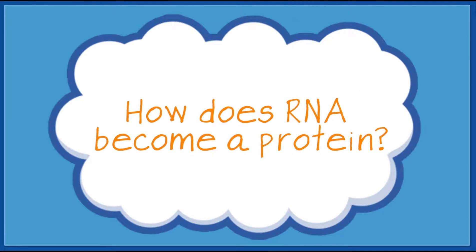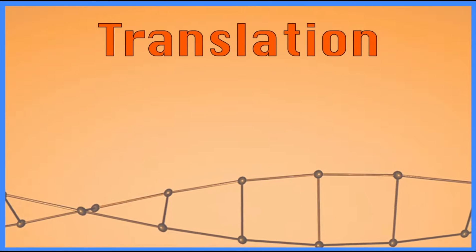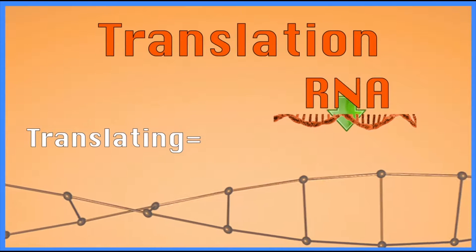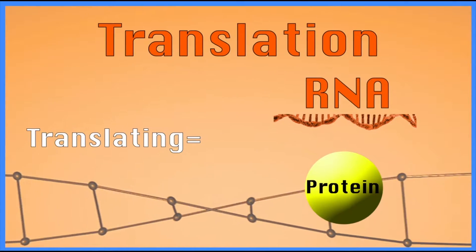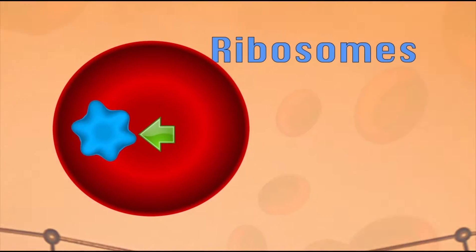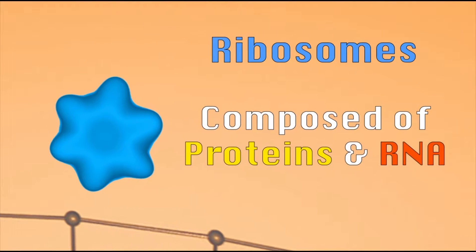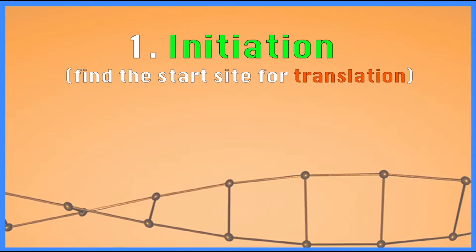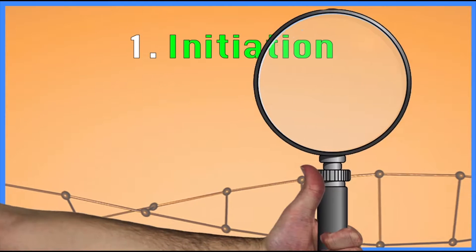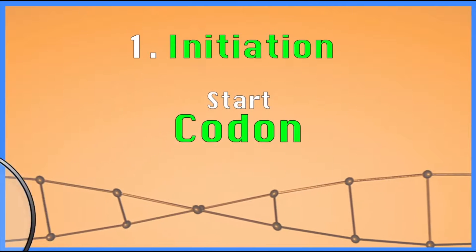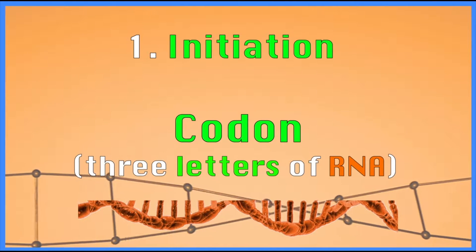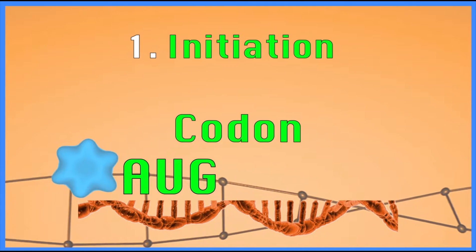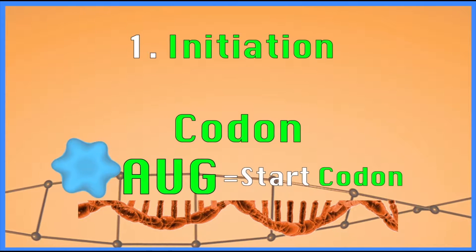How does RNA become a protein? That process is called translation — you're basically translating from an RNA, the same way you translate a language, into a protein language. It takes place in cellular machinery called ribosomes, which are composed of proteins and small RNAs. There are three steps to the translation process. There's an initiation step — just like we needed to find a start site for transcription, we have to find a start site for translation. We look for what's called a start codon — a set of three letters of RNA. As soon as the ribosome sees an AUG, it knows that's a start codon, and that's where it begins turning RNA into protein.